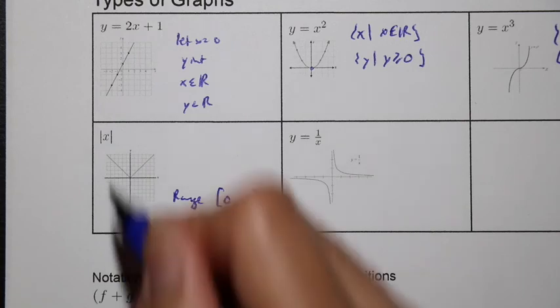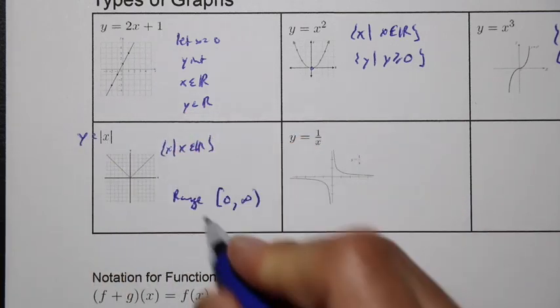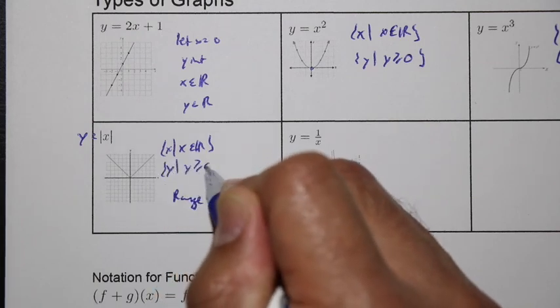Here, this is the absolute value of x. y is equal to absolute value. See that v-shape? Again, x can be anything. And y here, y is greater than or equal to zero.